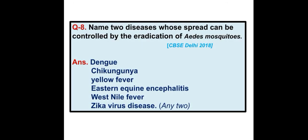Name two diseases whose spread can be controlled by the eradication of Aedes mosquitoes. Dengue, chikungunya, yellow fever, eastern equine encephalitis, West Nile fever, and Zika virus disease are diseases that can be prevented by the eradication of Aedes mosquitoes.